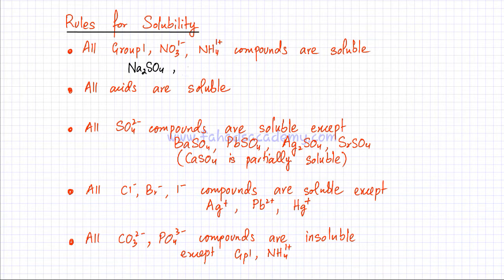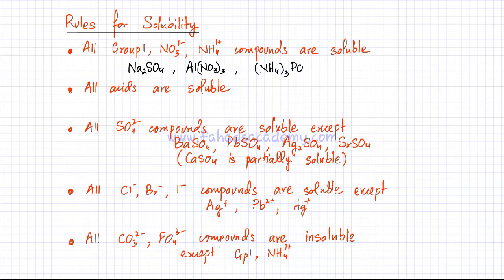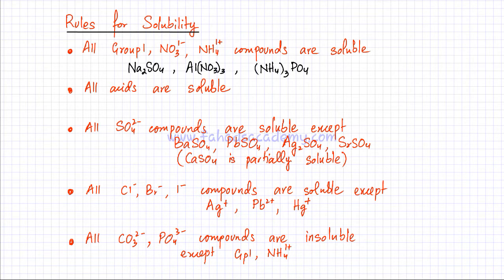Similarly, if you have aluminium nitrate, Al(NO₃)₃, that compound would also be soluble because it has nitrate ions. Any compound that has ammonium in it — for example, ammonium phosphate — would also be soluble. So any compound containing sodium ions, nitrate ions, or ammonium ions would be soluble and would dissociate in aqueous state.